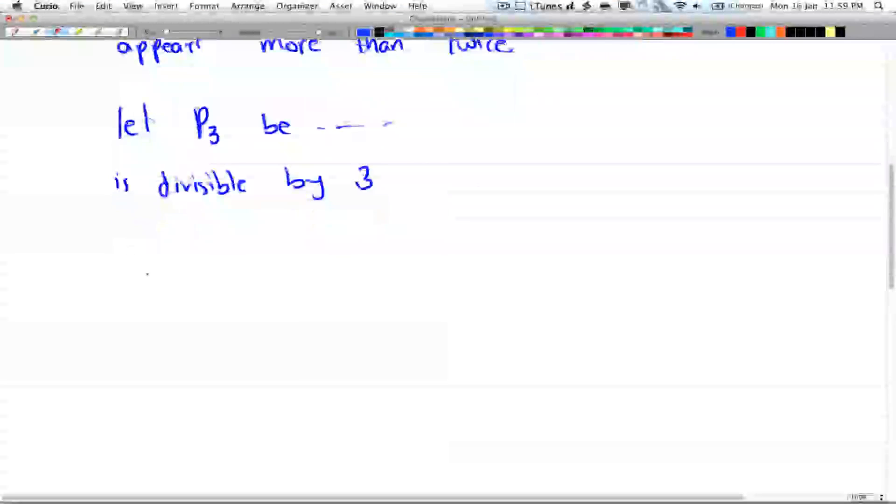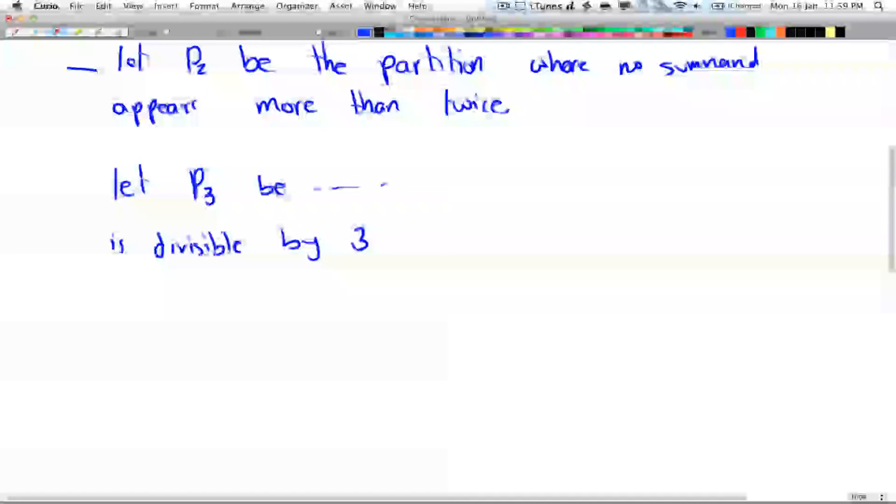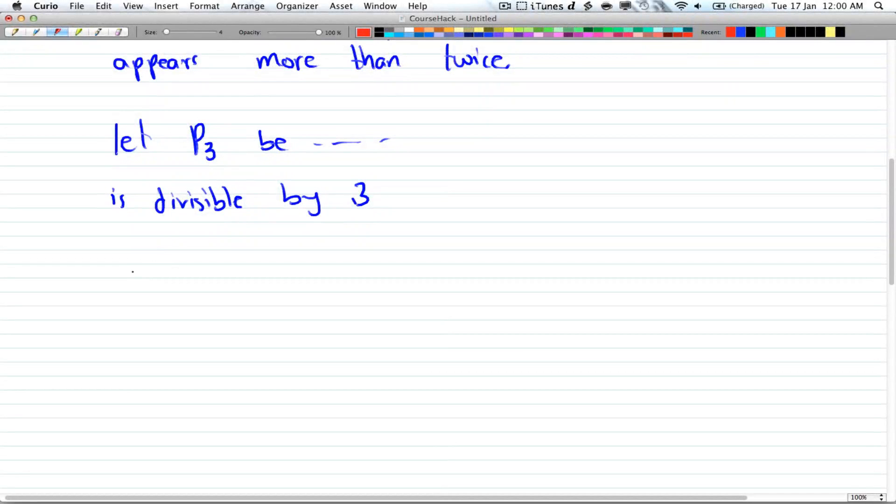Alright, so let's first try to solve this case where no summand appears more than twice. The generating function for that is: you can either have 0, 1, or 2 ones, and not more. Or you can have 0, 1, or 2 twos. Or 0, 1, or 2 threes, and so on.